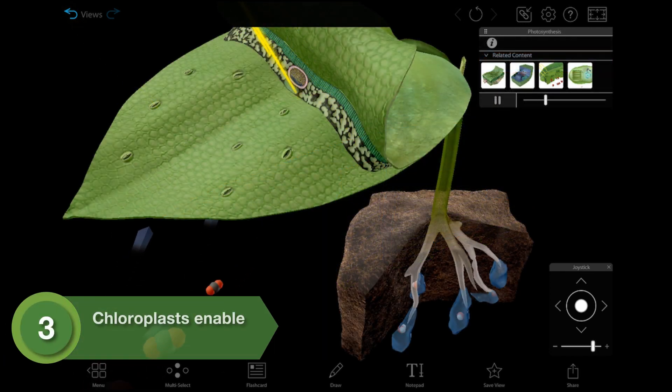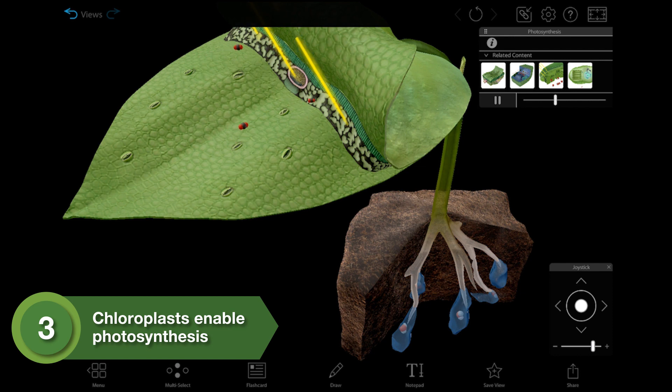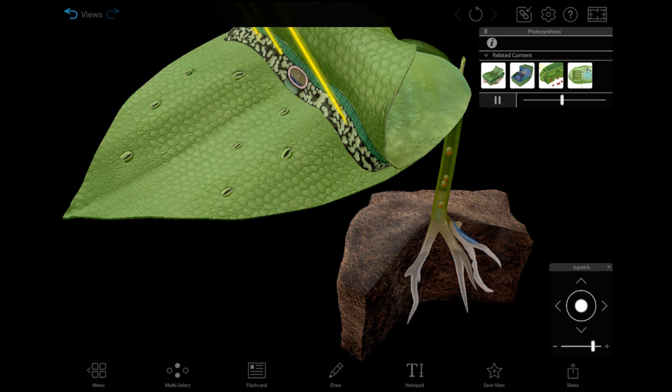Chloroplasts allow plants to carry out photosynthesis, that is, to make their own food using sunlight, carbon dioxide, and water.